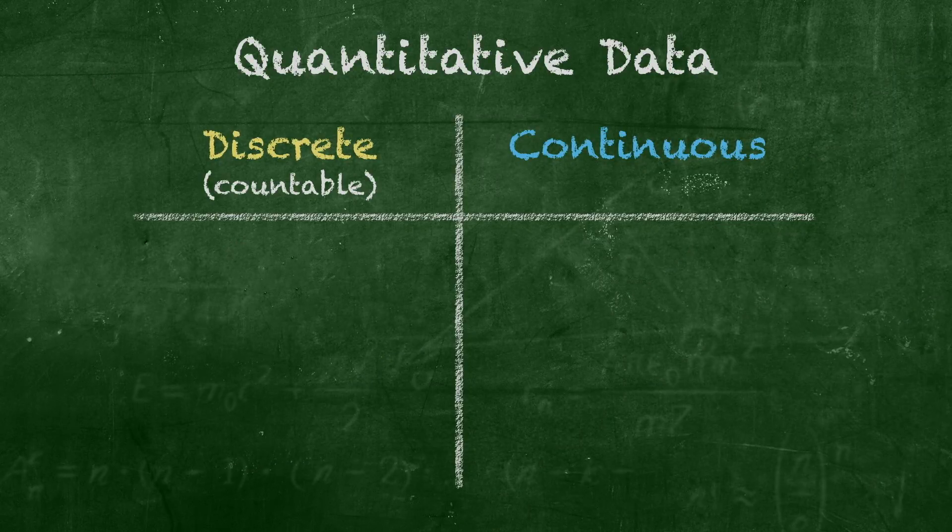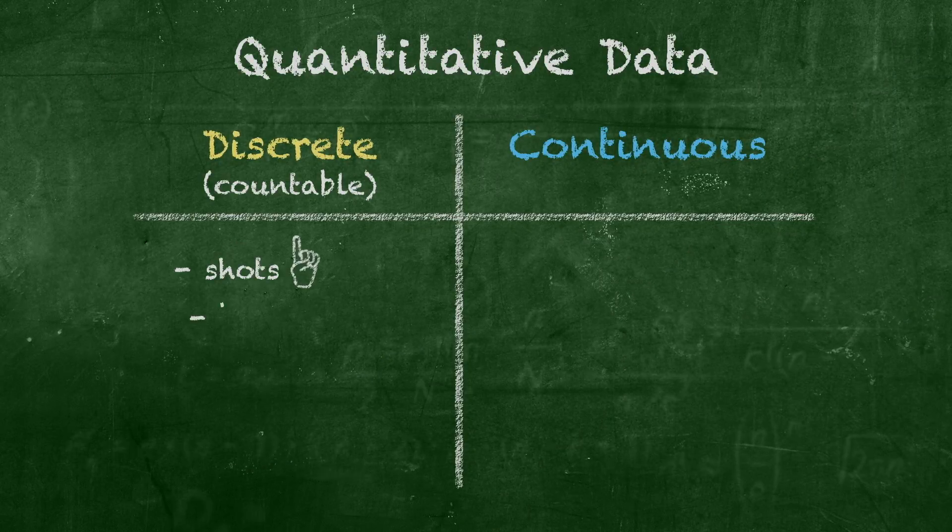Discrete variables are countable, like the number of shots a player makes or blocks in a game.